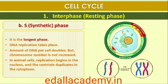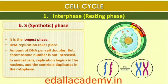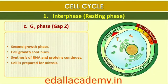In animal cells, during the S phase, DNA replication begins in the nucleus and the centriole duplicates in the cytoplasm. During the G2 phase, proteins are synthesized in preparation for mitosis while cell growth continues.